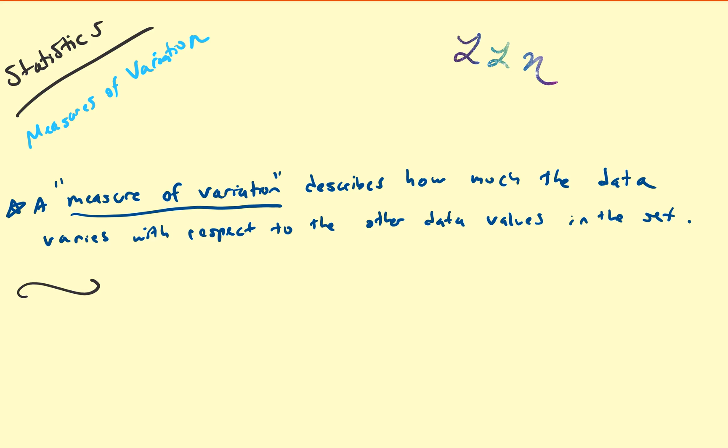Hello, and in this video on statistics, we're going to discuss what is called a measure of variation. If you haven't checked out how to calculate the different measures of central tendency, please do that before this video, because you need to know how to calculate the arithmetic mean of a set in order to calculate a couple of these things. A measure of variation describes how much a data value varies with respect to other data values in that set.